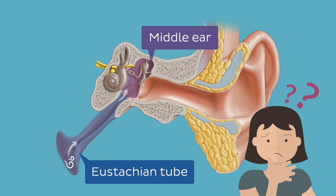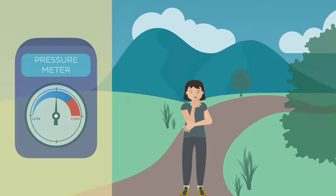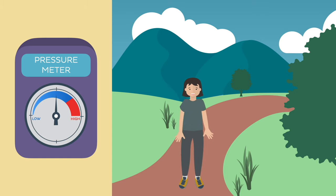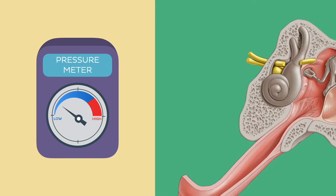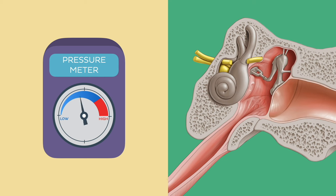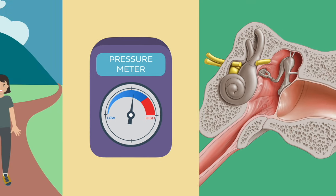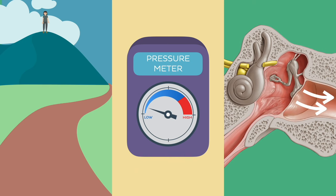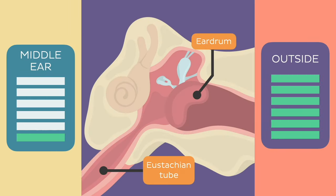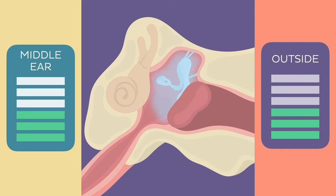Why would this be important? Well, the pressure of the air around us can change due to various factors — for example, climbing up a mountain where the pressure is low, or descending where the pressure is high. When the pressure of the air around us changes, our eardrum is affected, with high pressure pushing the eardrum inward and low pressure pulling it outward. The Eustachian tube enables new air to enter the middle ear, resulting in the equalizing of air pressures between the middle ear and your surroundings.